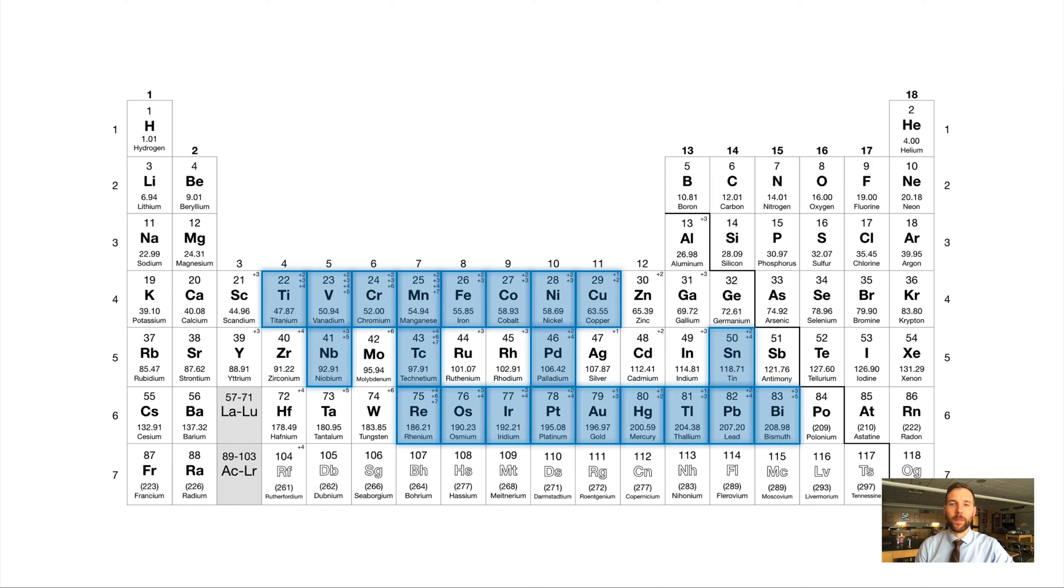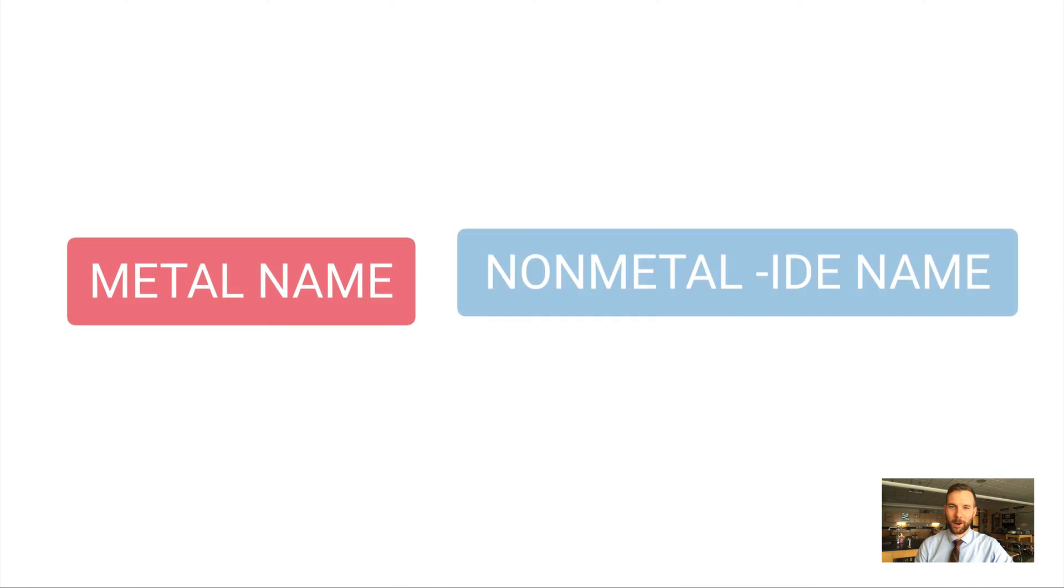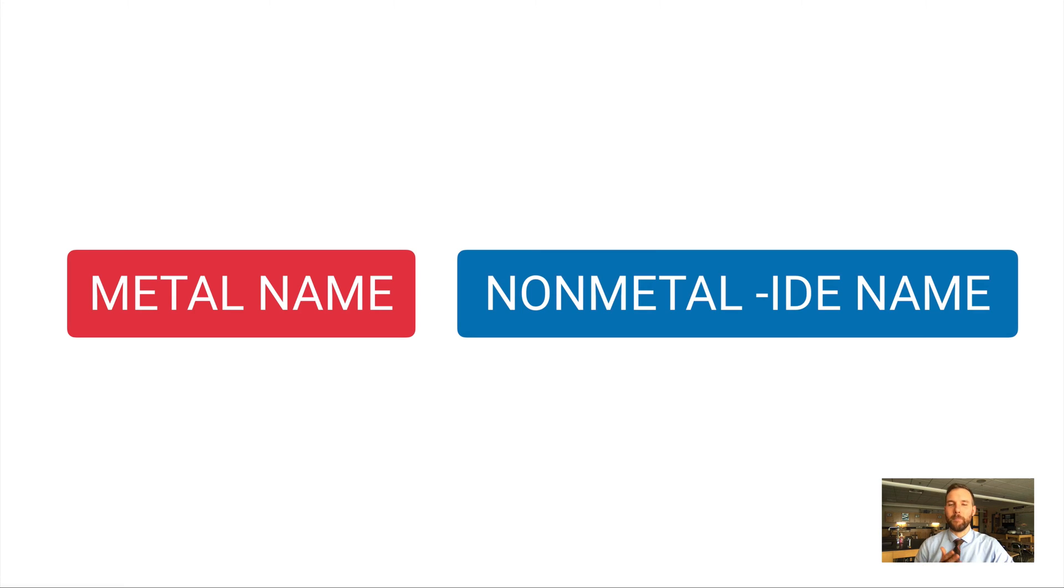Here's how we do that. Our template for going from formula to name with regular binary ionic: you write the metal name, put a space, and then write the nonmetal -ide name.